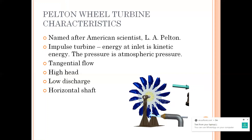Now your Pelton wheel has a few characteristics. First, it is an impulse turbine — that is, the energy at inlet is purely kinetic and the pressure is maintained at atmospheric pressure. It is a tangential flow, as this figure is quite clear. It requires a high head.